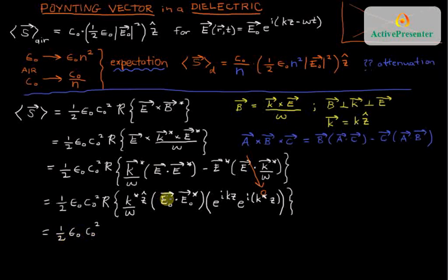E dot its complex conjugate will bring out E naught dot E naught complex conjugate. What's left in here? We've still got complex conjugate of K over omega and then we've got E to the I KZ times E to the I K complex conjugate Z. And I made a little omission here. This should be a minus sign. So when I look at these two terms, these are going to become E to the I K minus its complex conjugate, both times Z, and then this Z hat is the direction of the Poynting vector.